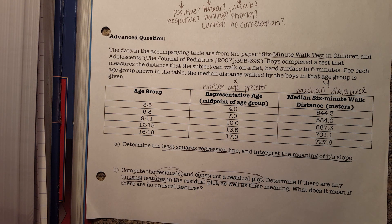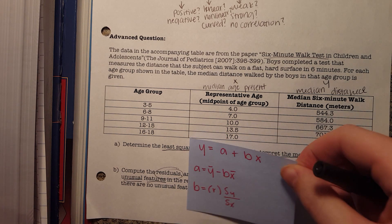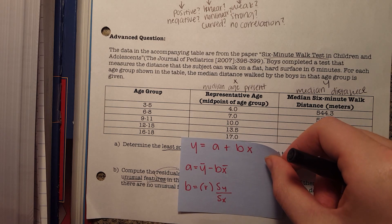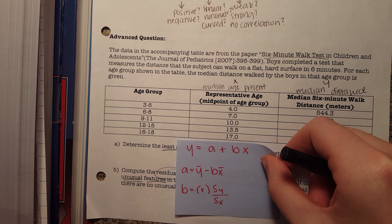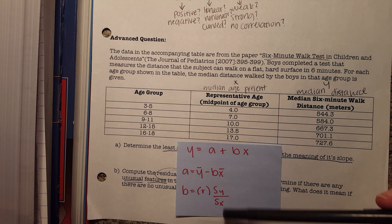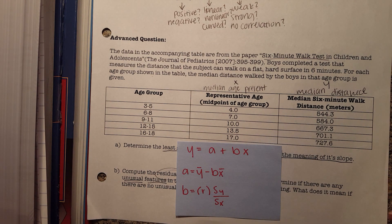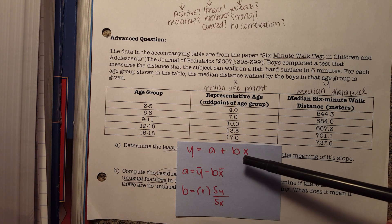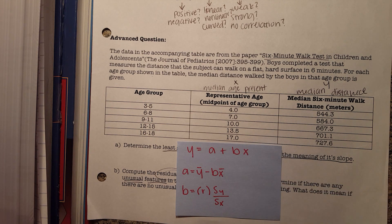Part A wants us to determine the least squares regression line and interpret the meaning of its slope. The equation for the least squares regression line is y equals a plus bx, where b is the slope.